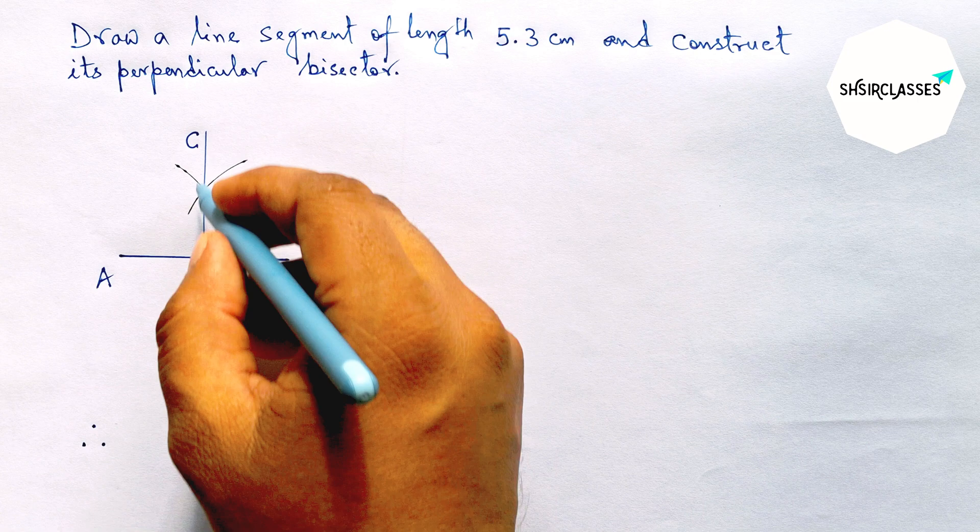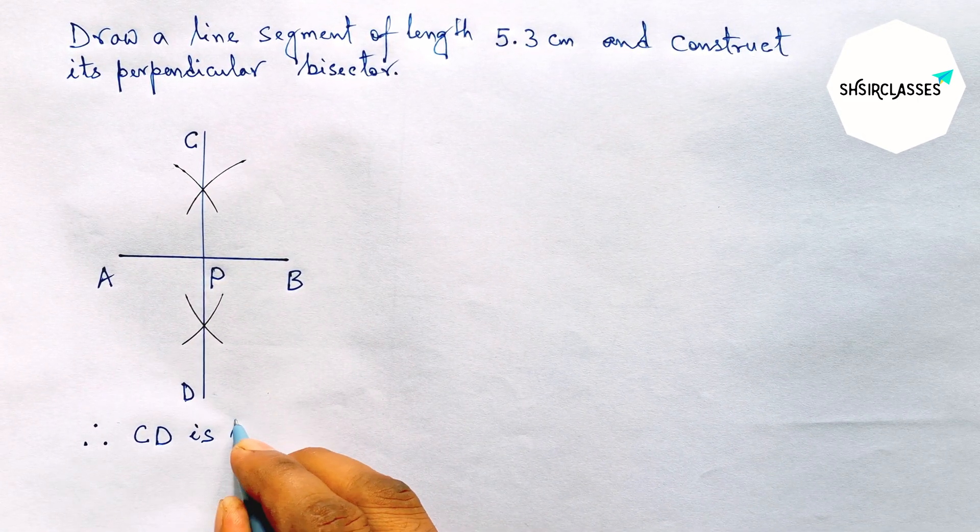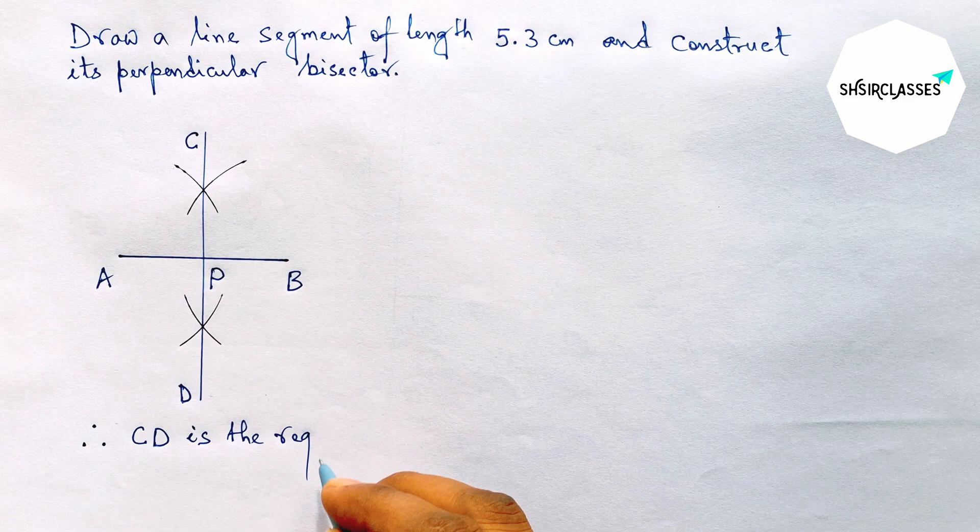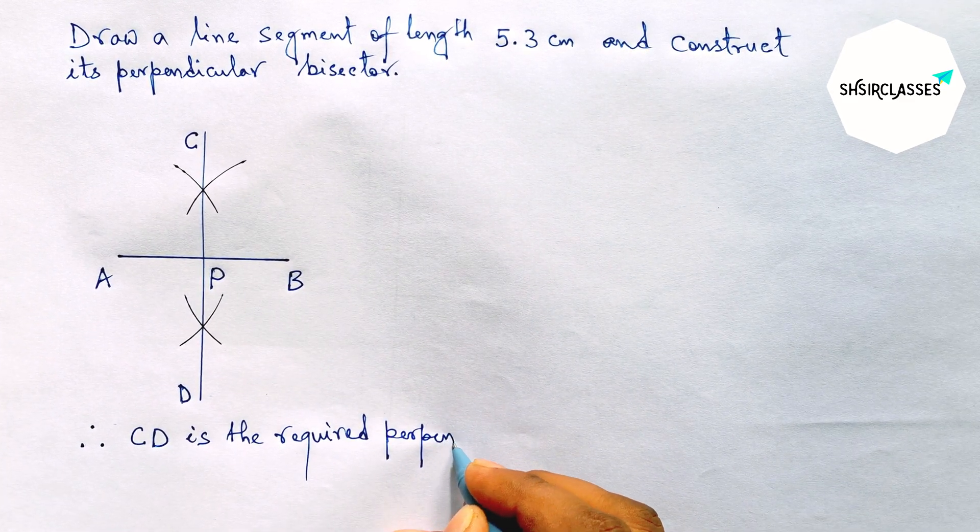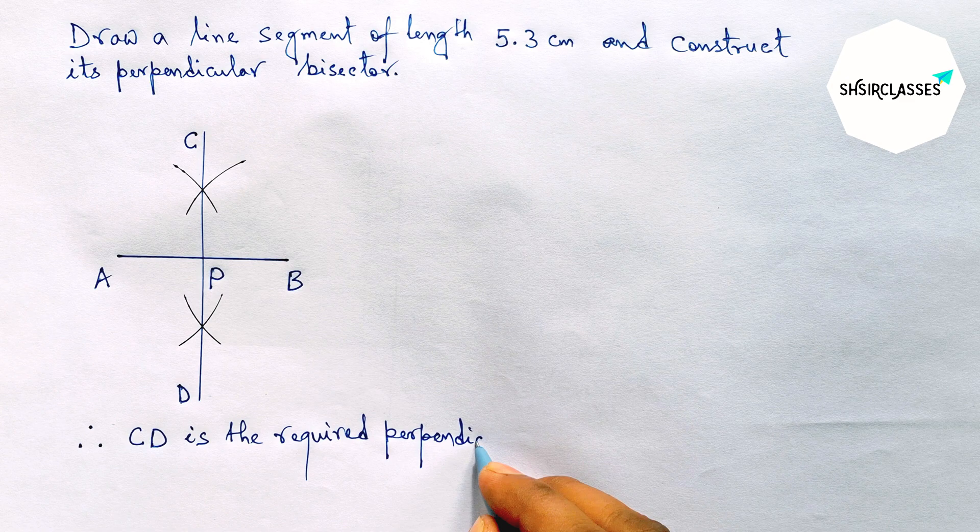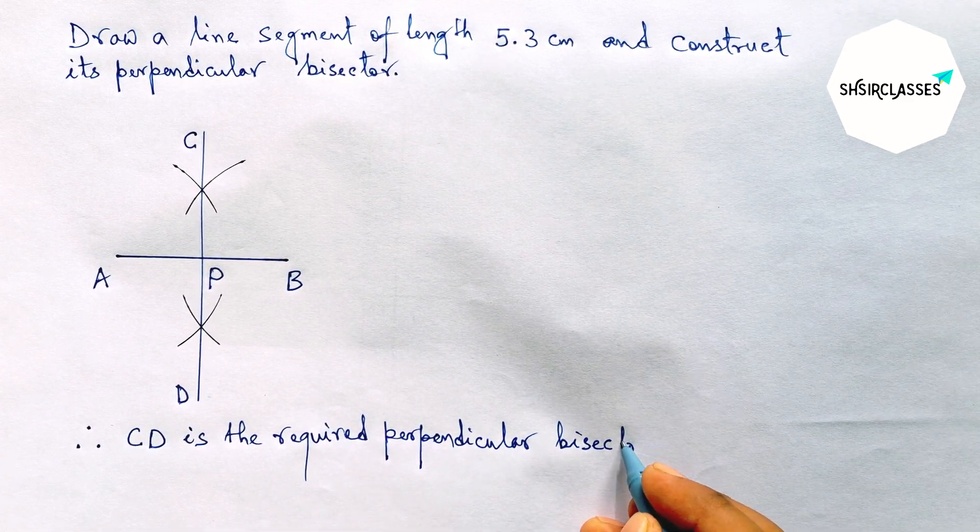Therefore, CD is the required perpendicular bisector to the line AB. By this way you can construct a perpendicular bisector to a given line in an easy way.